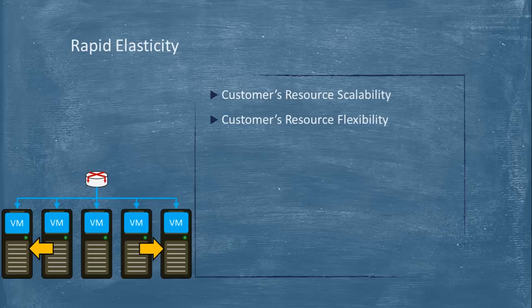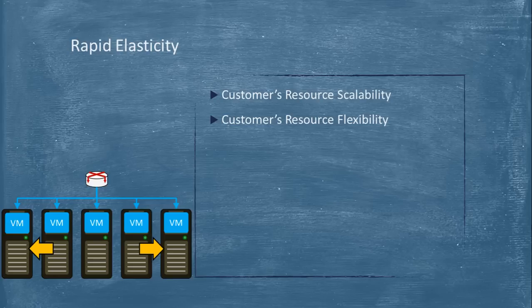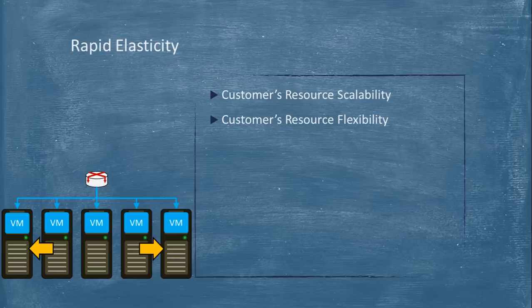This is called scaling out — provisioning new servers based on demand. When the sale ends at 11 o'clock, the extra servers that were created due to heavy utilization will be terminated, saving you money. You are scaling out when demand rises and scaling in when demand drops. This overall concept is called horizontal scaling. There is also vertical scaling, where you shut down a server, increase memory from 4 GB to 6 or 8 GB, increase CPUs from two to four, and power it back on. Increasing the computing power of a single machine is vertical scaling, whereas provisioning new servers is horizontal scaling. This whole concept is called rapid elasticity.